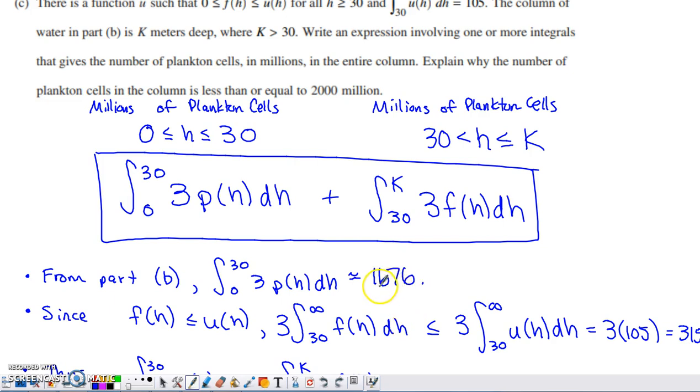We know what the first component of that expression has a value of. Back in part B, we determined that that was about 1676 million cells of plankton.